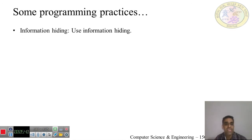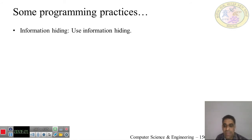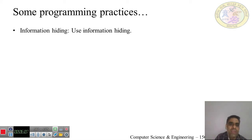The next programming practice is information hiding. As we have seen, information hiding is required because it secures data in a data structure so that data is hidden from the rest of the system. It reduces coupling between modules and makes the system more maintainable — that is why we should use information hiding in our programs.